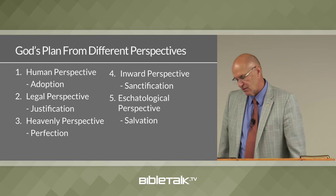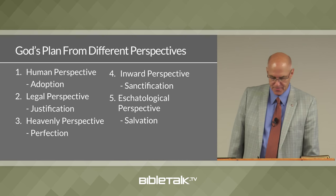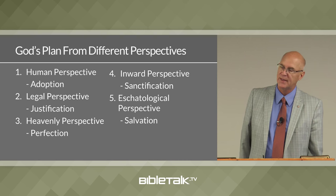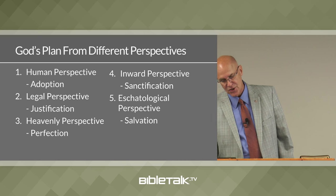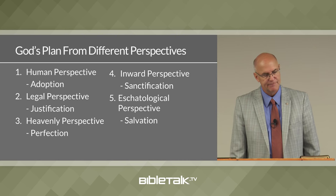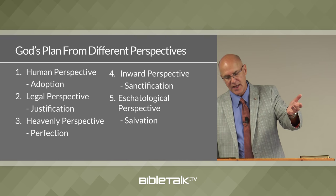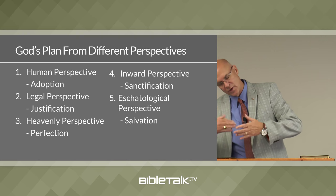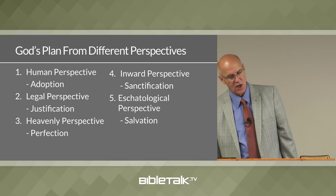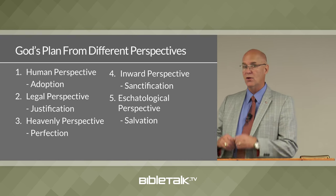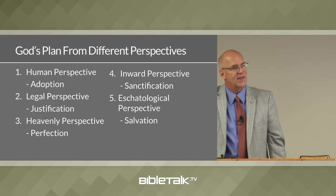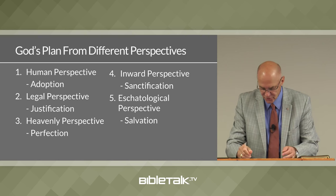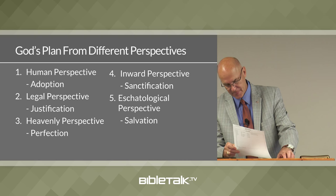The first of these next five sub-doctrines is the doctrine of adoption — it looks at God's plan from a human perspective. The doctrine of justification looks at God's plan from a legal perspective. The sub-doctrine of perfection looks at it from a heavenly perspective. The sub-doctrine of sanctification looks at it from an inward perspective. And the sub-doctrine of salvation looks at God's plan from an eschatological perspective — the final result at the end when all of this is done.